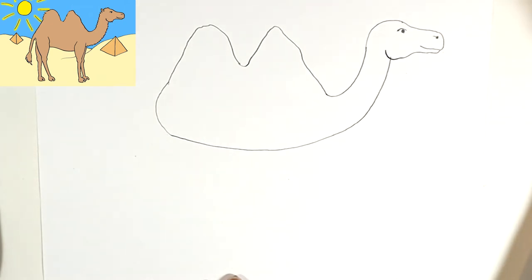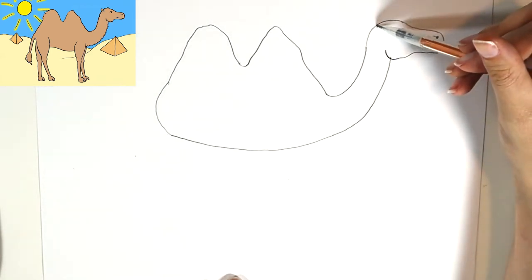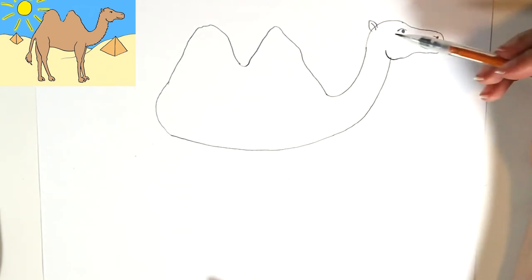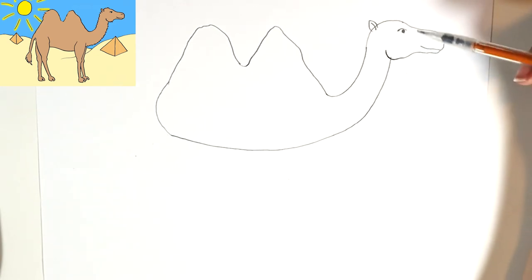Then before we go on, we're gonna do the ear, so it's just two curved lines that touch and then an extra curved line inside, like the inside of the ear.